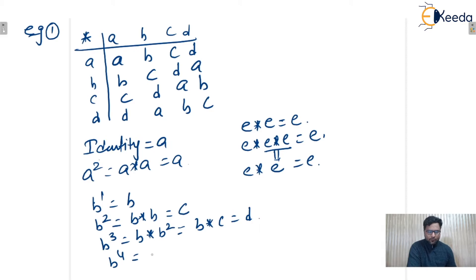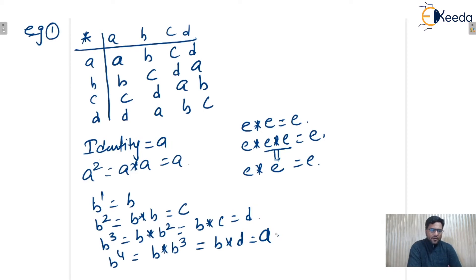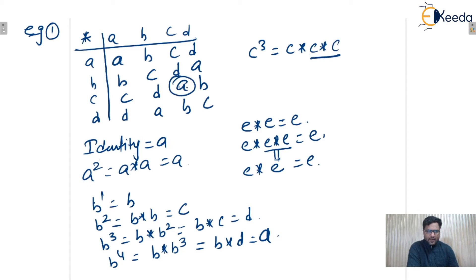B to the power 4 is B star B cubed, that is B star D, and B star D from the table is A — the identity element. Similarly, C cubed is C star C star C. C star C equals A from the table, and A star C equals C. So C cubed is C.